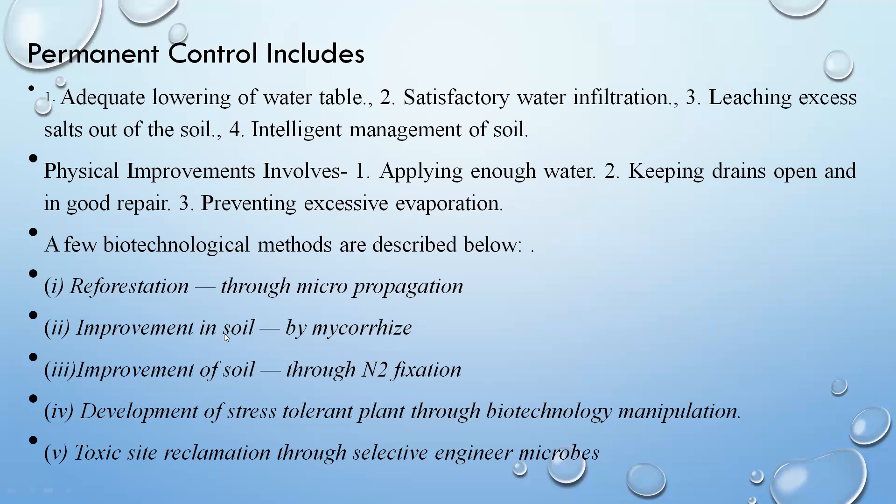Biotechnological methods for improving degraded soil include: improving soil using mycorrhiza, which is a particular plant-fungus association that can increase soil fertility; nitrogen fixation, which is a biotechnological method to maintain soil fertility; development of stress-tolerant plants through biotechnological manipulation; and toxic site reclamation through selective engineering of microbes, which uses engineered soil microbes to improve fertility.